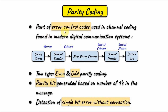Parity coding is part of error control codes, which are applied in channel coding found in modern digital communication systems. A typical digital communication system is made of the binary source that generates the message, which is fed into the channel encoder that generates the codeword. The purpose of the channel encoder is to generate parity bits that are added to the message in order to protect the message from any noise found in the channel.